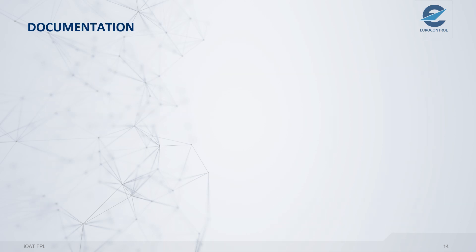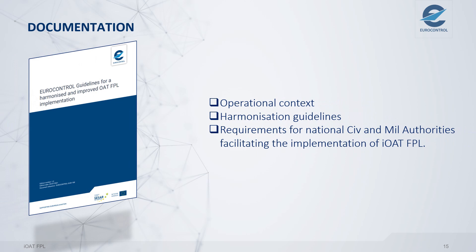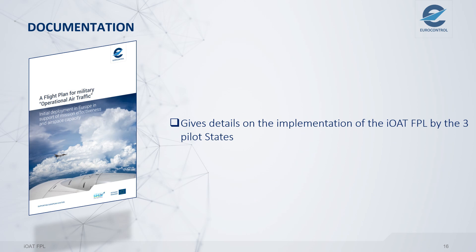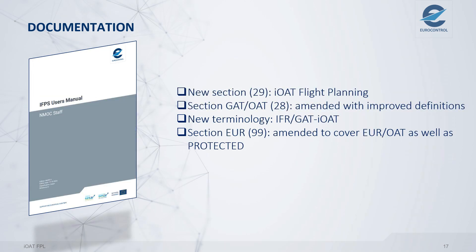Let's walk through some supporting documentation. First is the Eurocontrol guidelines for a harmonized and improved OAT flight plan implementation, which describes the context, harmonized guidelines, and requirements. Then there is a flight plan for military operational air traffic, giving details on the implementation by the three pilot states. Finally, the IFPS User's Manual has a section dedicated to the IOAT flight plan — Section 99 — covering EUR/PROTECTED and EUR/OAT.